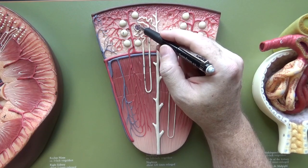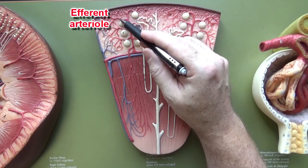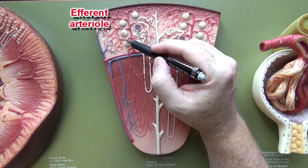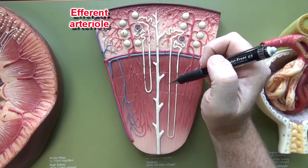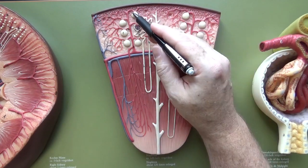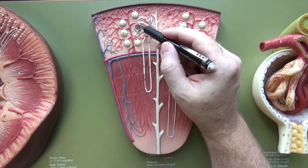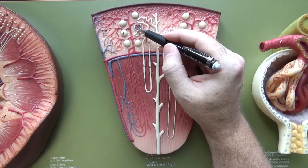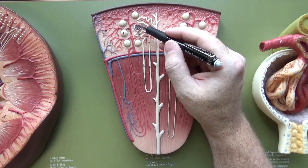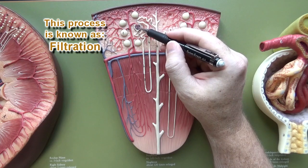Exiting the glomerulus we're going to have efferent arterioles, and we can see those efferent arterioles here. The efferent arterioles are going to be smaller than the afferent arterioles. What's going to happen is the pressure inside the glomerulus is going to increase, and that's going to force the fluid portion of the blood out into Bowman's capsule, or the glomerular capsule.